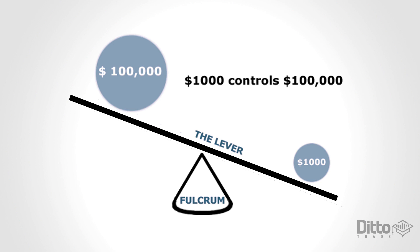Ordinarily, trading is done on 100,000 units of currency. For a trade of this size, the leverage provided is normally 50 to 1 or 100 to 1. Leverage of 200 to 1 is usually reserved for positions of $50,000 or less.